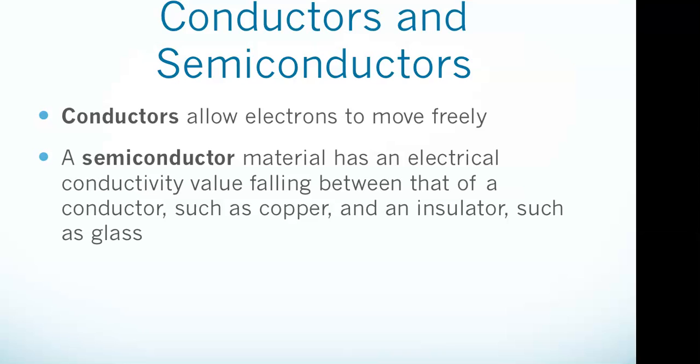A semiconductor material has an electrical conductivity value falling between that of a conductor, such as copper, and an insulator, such as glass. Their resistance decreases as their temperature increases, which is behavior opposite to that of a metal.